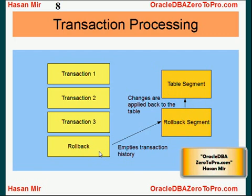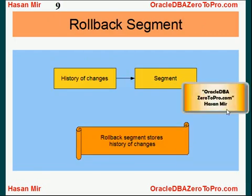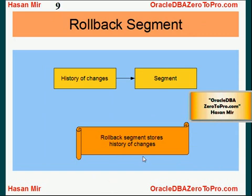All the changes will be applied back so the table will take the same state as it was before all these transactions happened. That's the role of the rollback segment. Keep in mind that whatever changes users apply are actually happening in the table, but the previous states are stored in the rollback segment. It's not the other way around — it's not that changes are stored in the rollback segment and only applied to the table after a commit.